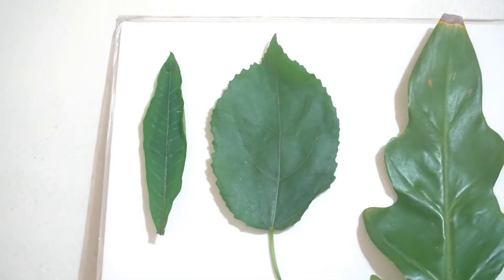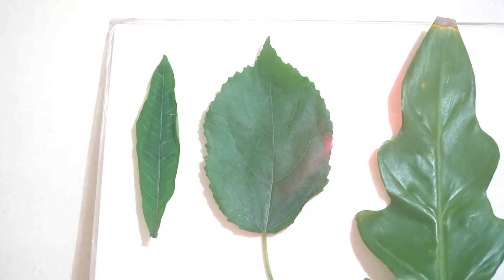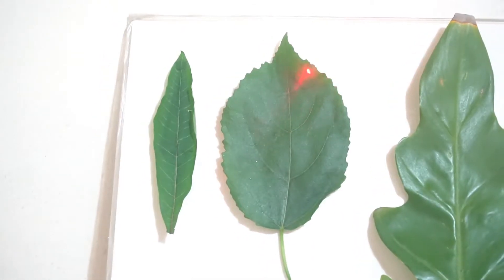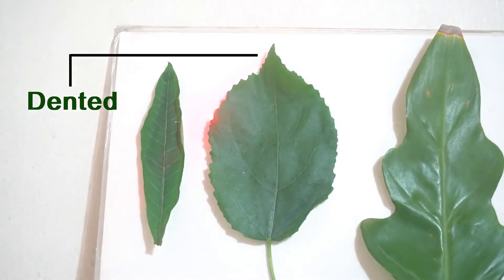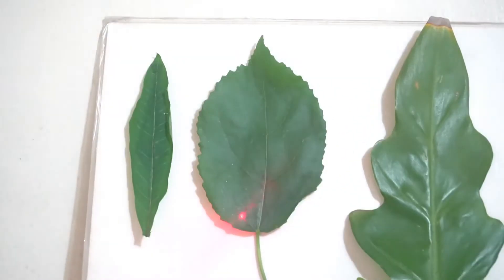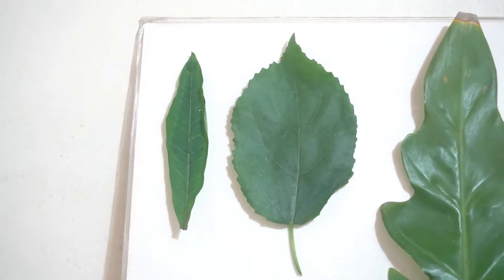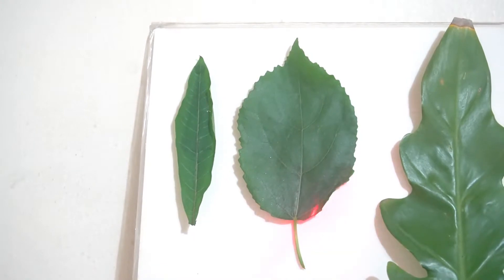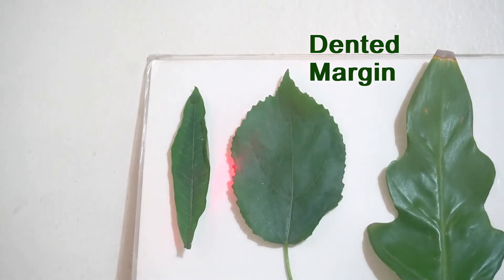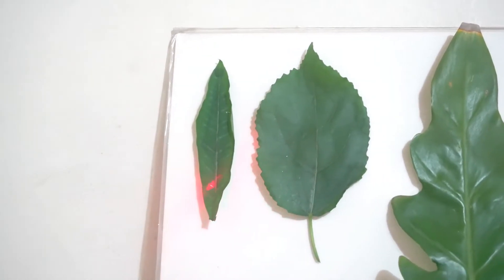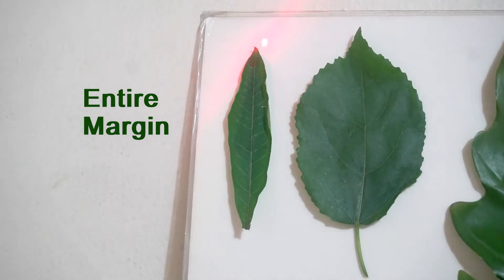Now look at this one — the edge is not smooth. You can see the edge here. Say that it is dented. The edge is dented. So we have dented margin. Then we have entire margin, where the margin is smooth.